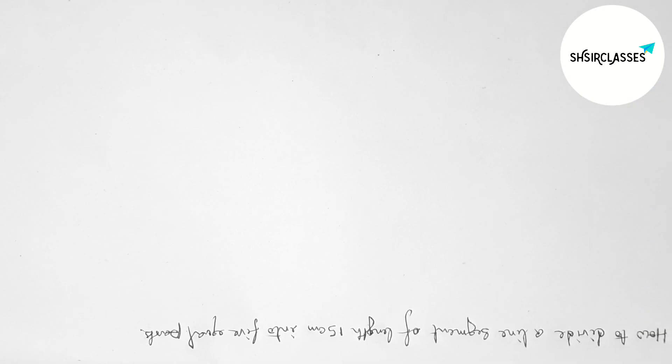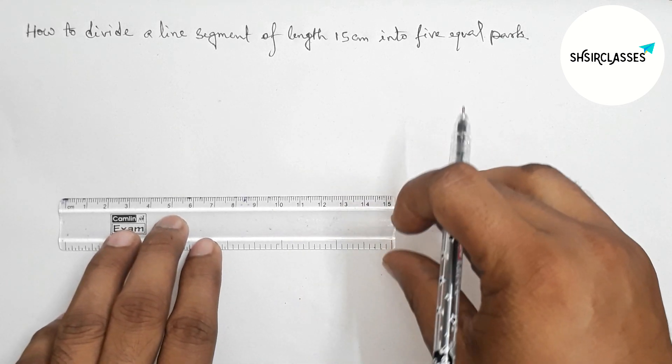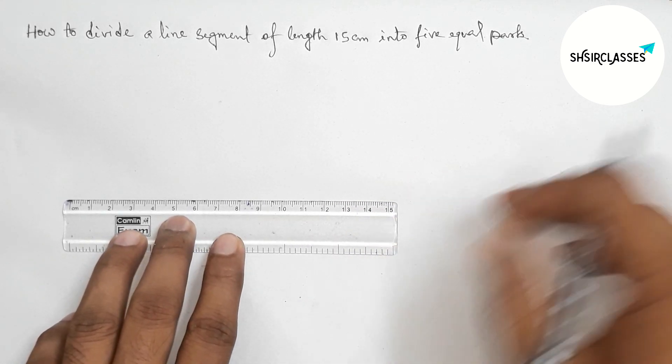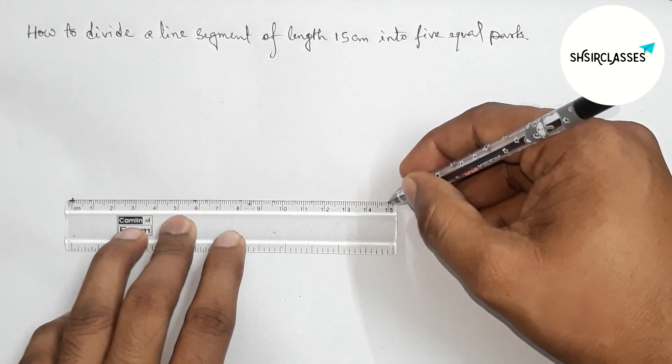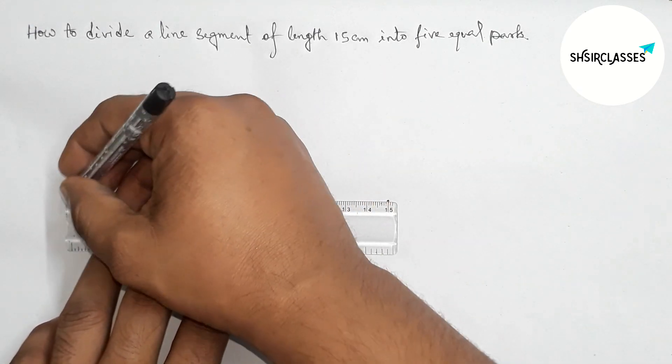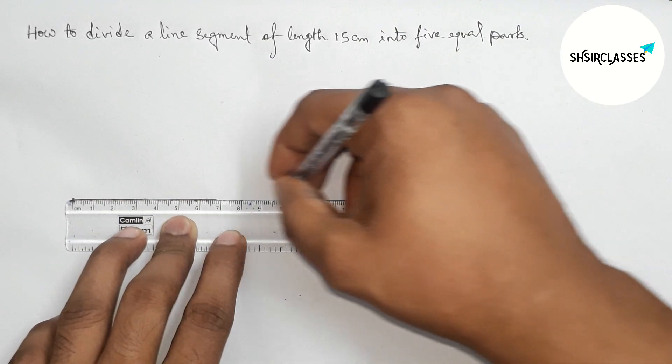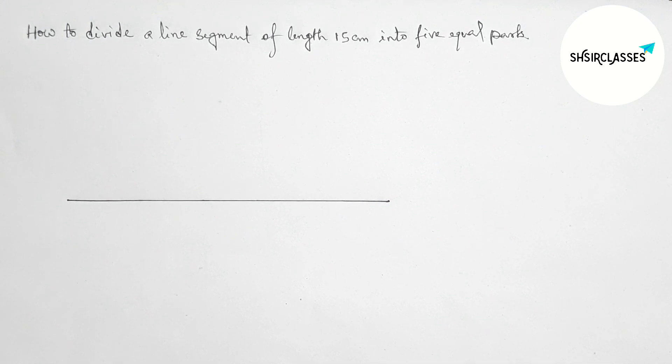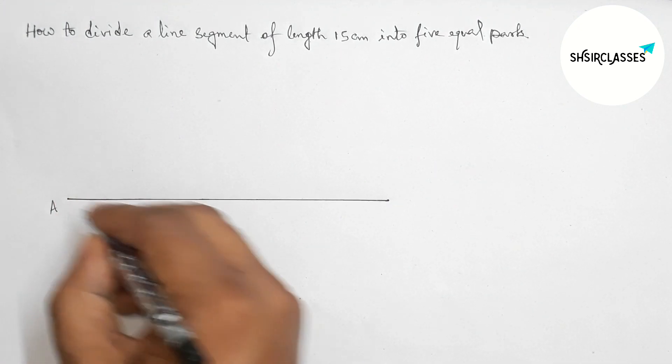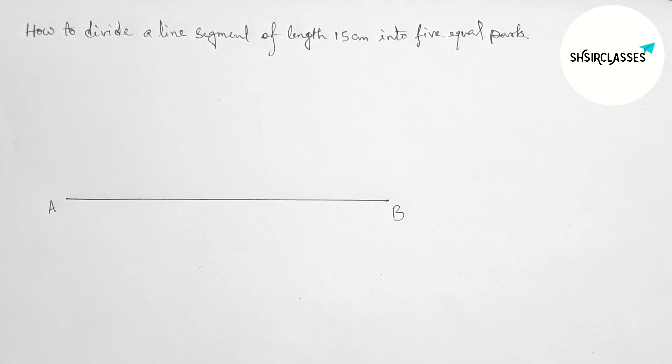First of all, let's draw a line segment of length 15 centimeters. So here this is a 15 centimeter line segment. Next, mark point A here and point B here. Now draw an angle at point A.